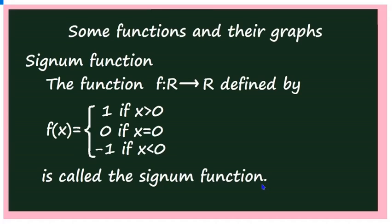If the question asks you to define the signum function, you have to write: the function f from R to R defined by f(x) = 1 if x is greater than 0, f(x) = 0 if x equals 0, and f(x) = −1 if x is less than 0. This is the definition of the signum function.